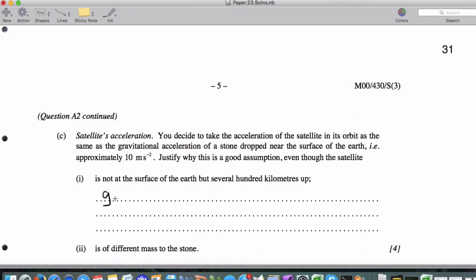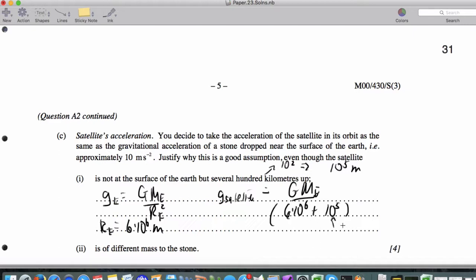G normally on Earth is capital G, mass of the Earth, over the radius of the Earth squared. And we know the radius of the Earth is about 6 times 10 to the 6th meters. Fine. Now, let's say we're several hundred kilometers up. Hundred means 10 squared. Several hundred means 10 to the 5th meters. So G for the satellite is going to end up being G, mass of the Earth, over 6 times 10 to the 6th plus 10 to the 5th for that extra height, if we're doing an estimate.